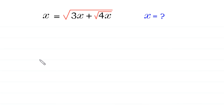Hello, welcome to how to solve this radical equation. x is equal to square root of 3x plus square root of 4x, and we need to find all possible values of x.